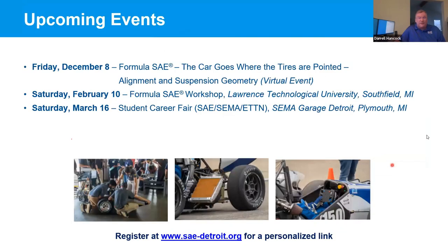We have a couple more upcoming events. A week from today, there's a presentation on steering geometry and alignment called 'The Car Goes Where the Tires Are Pointed' — another online presentation next Friday. Then Saturday, February 10th, we will have an in-person workshop at Lawrence Tech in Metro Detroit. Then Saturday, March 16th, the SAE Detroit chapter is hosting a student career fair at the SEMA garage in Plymouth, Michigan. You can go to sae-detroit.org and register for any of these upcoming events.